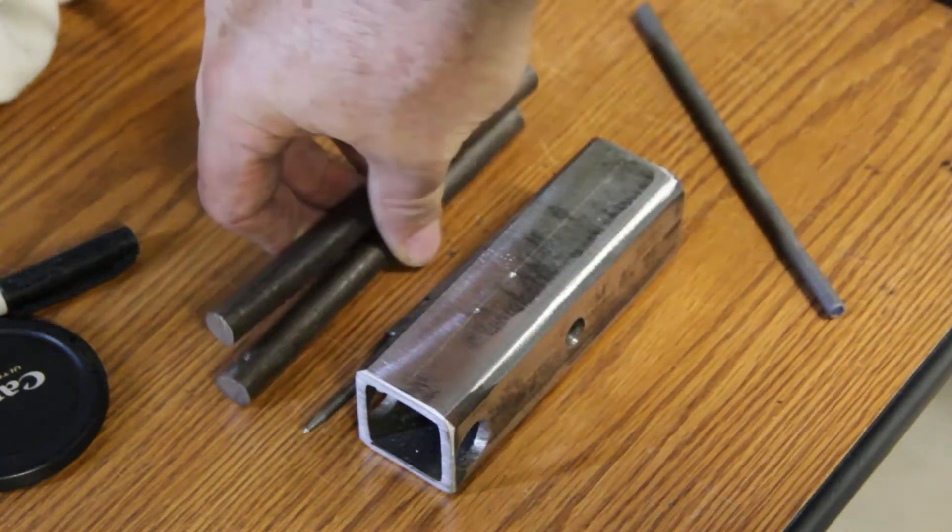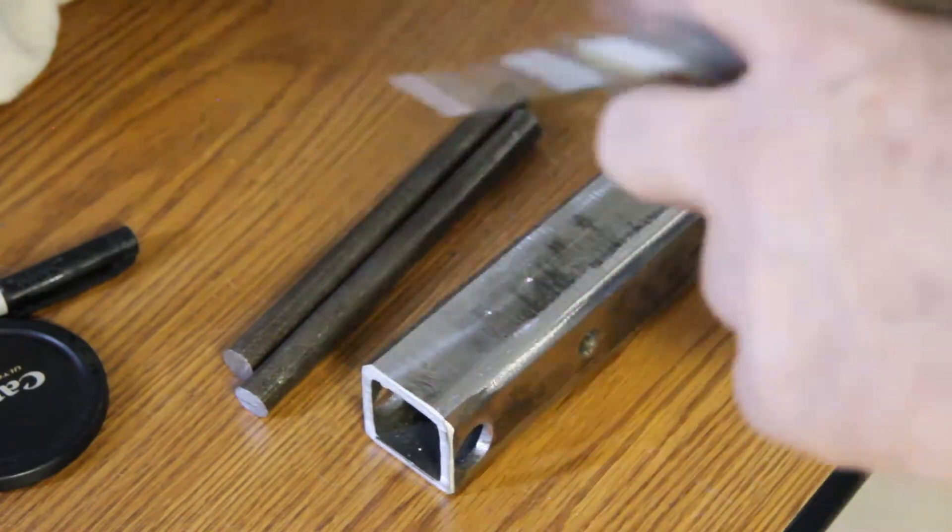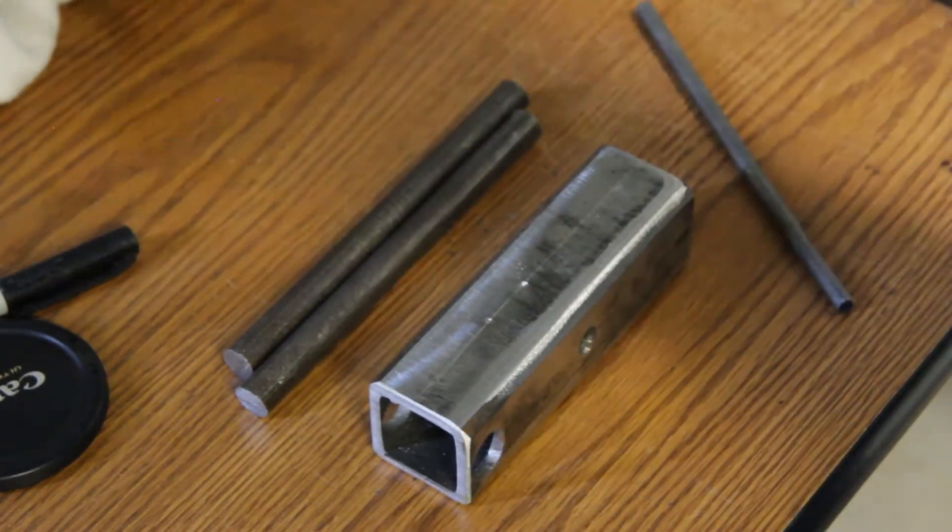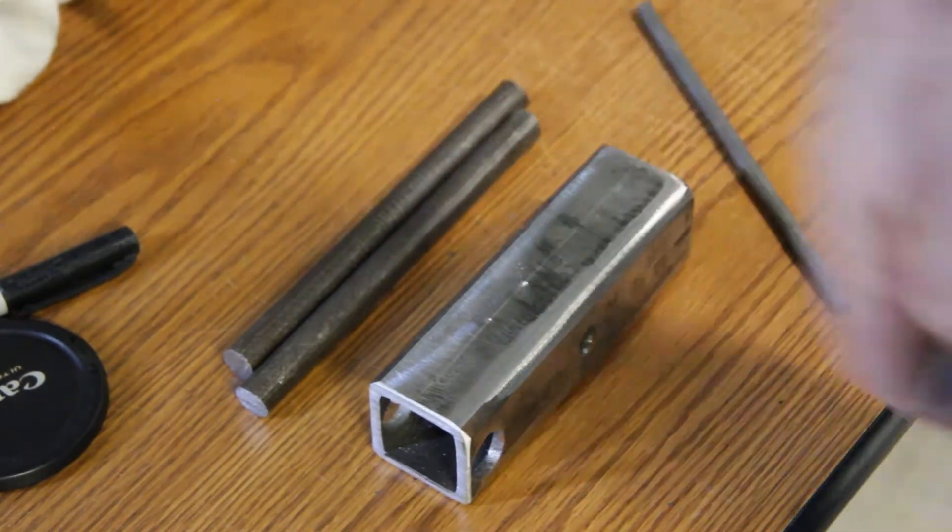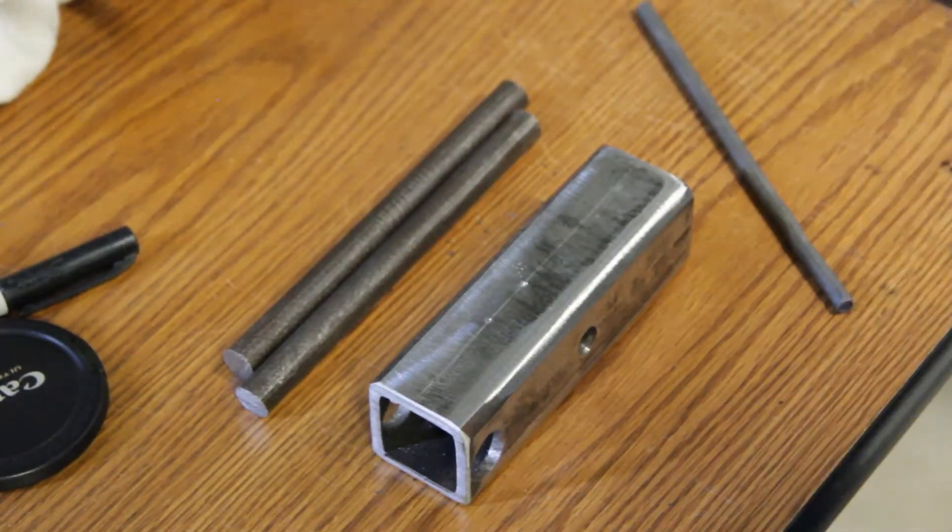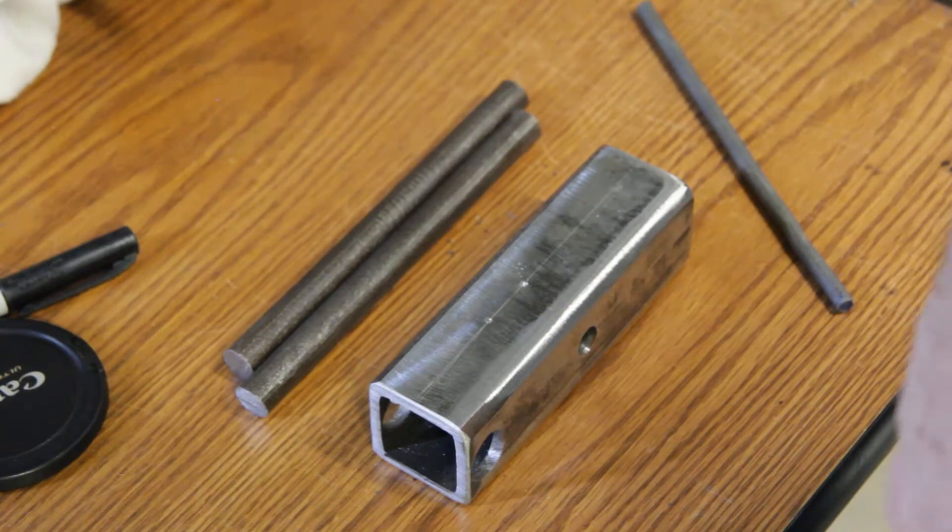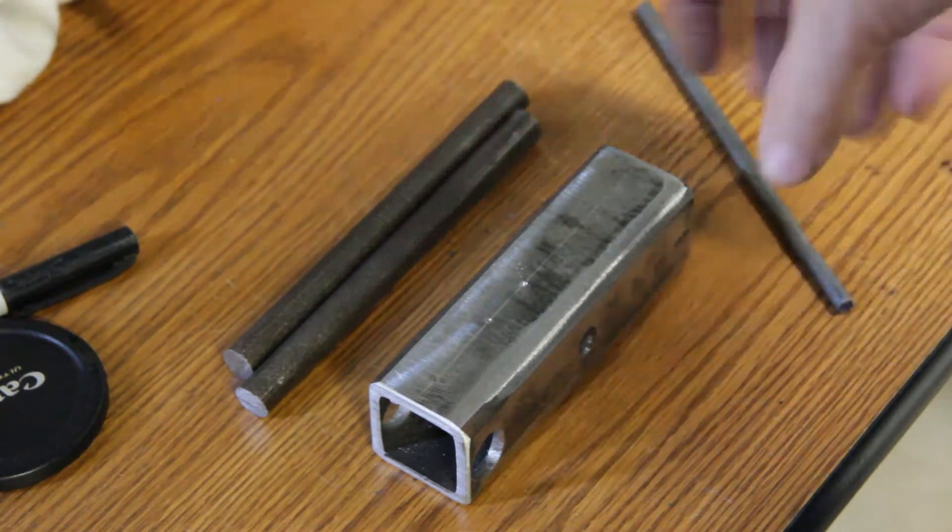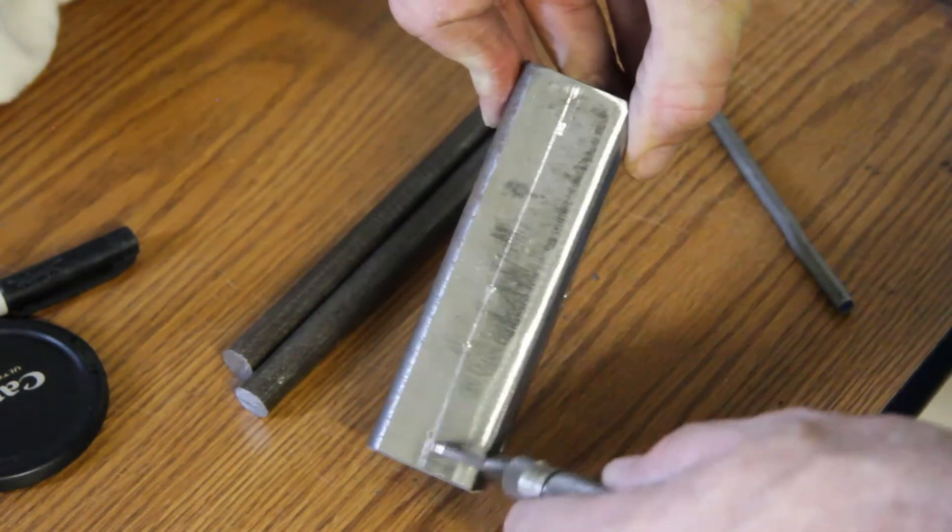So what we're going to do is we're going to mark a center line using a scribe. You want to use a scribe because you'll get a very small line and you get much greater accuracy than using a felt tip marker or some welder's chalk or anything like that. So whenever possible, use a scribe.